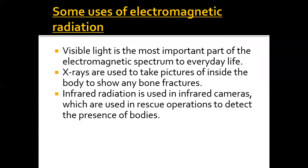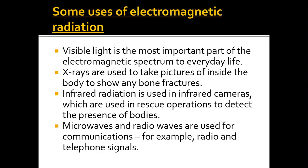Infrared radiation is used in infrared cameras and night-vision goggles. Soldiers and security personnel use infrared cameras to see clearly in the dark. Finally, microwaves and radio waves are very important for communication — radio and telephone signals travel via microwaves and radio waves. That is why these two types of rays are also very important.